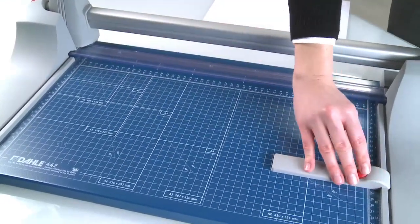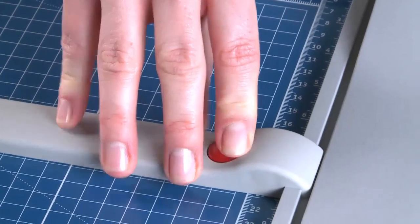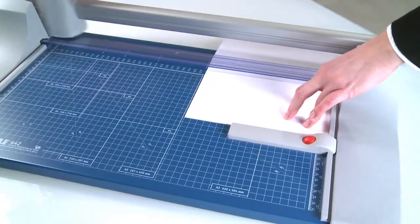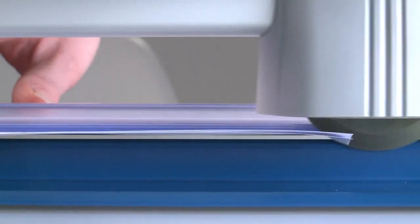The adjustable backstop makes the cutting stock easy to align. Automatic clamping reliably holds the cutting stock in place.